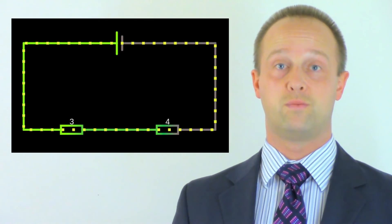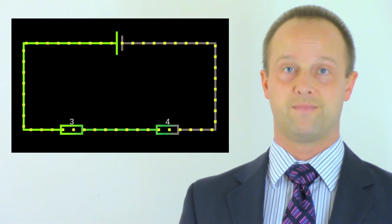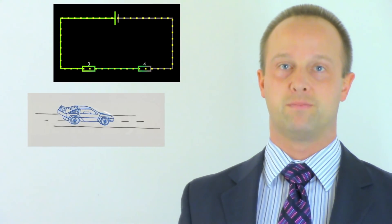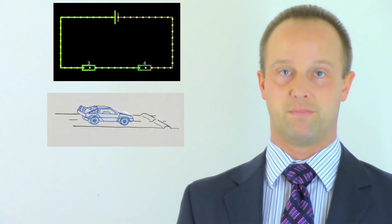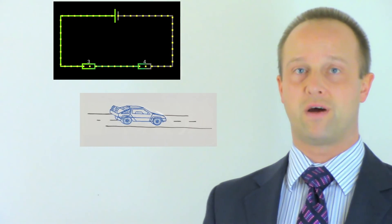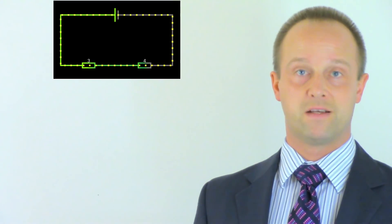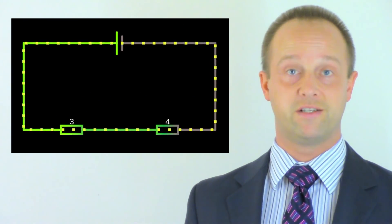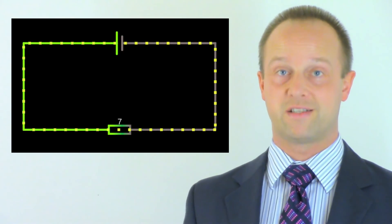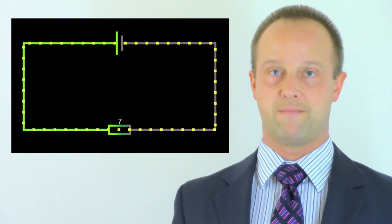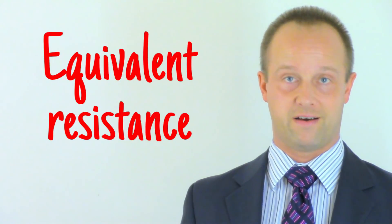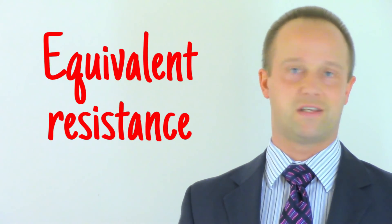Let's imagine we have a three ohm resistor in series with a four ohm resistor. Going back to our car analogy, the first one is a section of road with three speed bumps, and the second one is a section of road with four speed bumps. For a car to get from one end to the other, it has no choice but to drive over all of them — a total of seven speed bumps. So the total resistance is just seven ohms. You just add the resistances together. In fact, we could replace our two resistors with a single seven ohm resistor, and our circuit would work the same. We call this an equivalent resistance — our three ohm resistor and our four ohm resistor have an equivalent resistance of seven ohms.